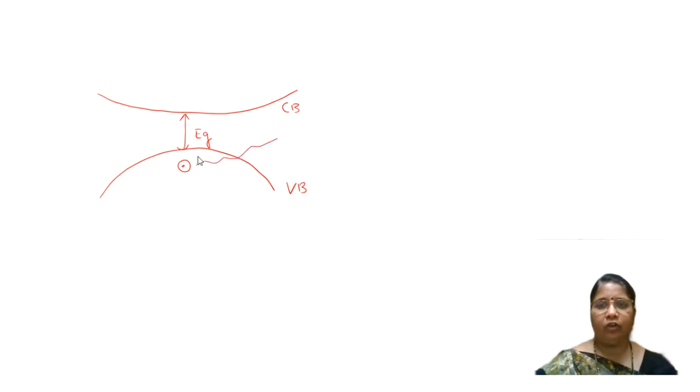Suppose I have a photon coming in of energy H nu, which is greater than EG. Obviously, this electron gets this energy and makes a transition to the conduction band. So far, it is something you have seen already. This electron, when it comes to the conduction band, will generally be converted into a conduction electron and drift away. This is what generally happens.